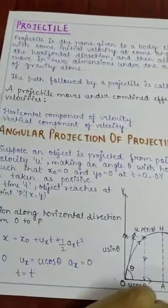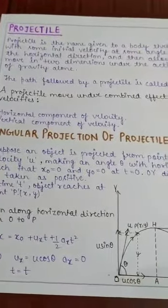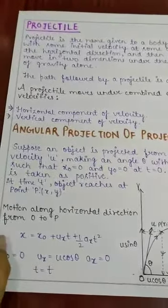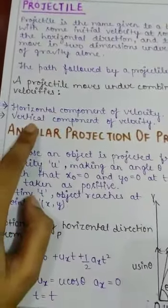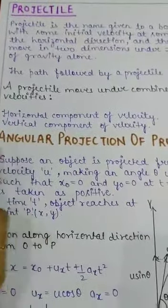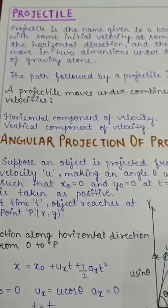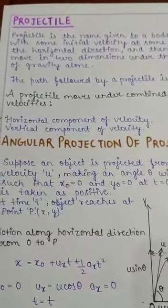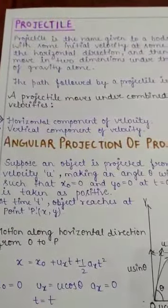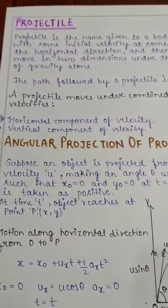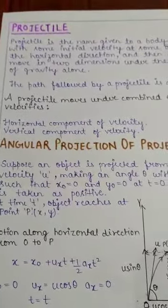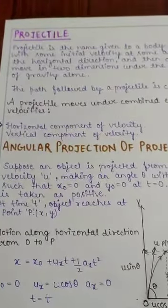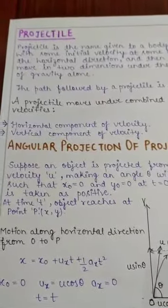Ab jab bhi koi projectile move karta hai, tab usmein do velocities ka combined effect lagta hai. Pehli velocity aayegi horizontal component of the velocity aur dusri hai vertical component of the velocity. Horizontal component velocity ka hamesha constant rahega agar hum air resistance ko ignore karte toh. Aur vertical component velocity ka increase bhi ho sakta hai, aur decrease bhi ho sakta hai. Ye depend karega humari motion pe. Agar hum against the gravity jayenge, toh vertical component velocity ka kam hota rahega. Aur agar hum along the gravity jayenge, toh vertical component velocity ka badhta rahega.